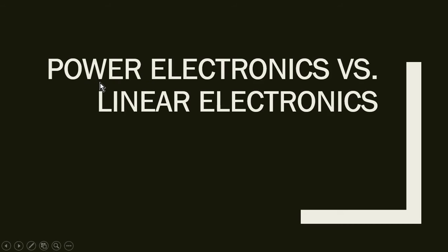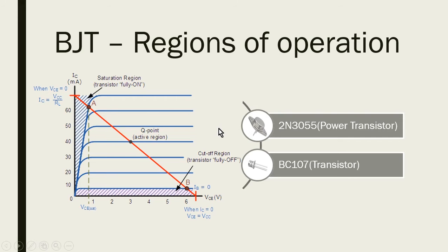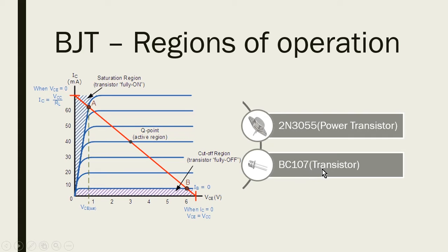Here we will learn about the difference between power electronics and linear electronics. Before that, consider the regions of operation of a BJT — bipolar junction transistor. Here you can see two transistors: the 2N3055, which is a high-power transistor, and the BZ107, which is your normal transistor with a low power rating.